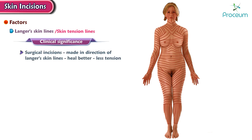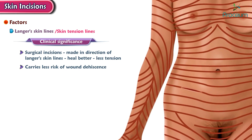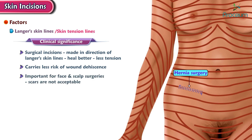Clinical significance: surgical incisions made in the direction of these lines — horizontal incisions — heal better with less tension. They also carry less risk of wound dehiscence. For example, in the case of hernia surgery, a horizontal incision is preferred due to better healing, and a vertical incision is avoided. This is particularly important for face and scalp surgeries where scars are not acceptable.